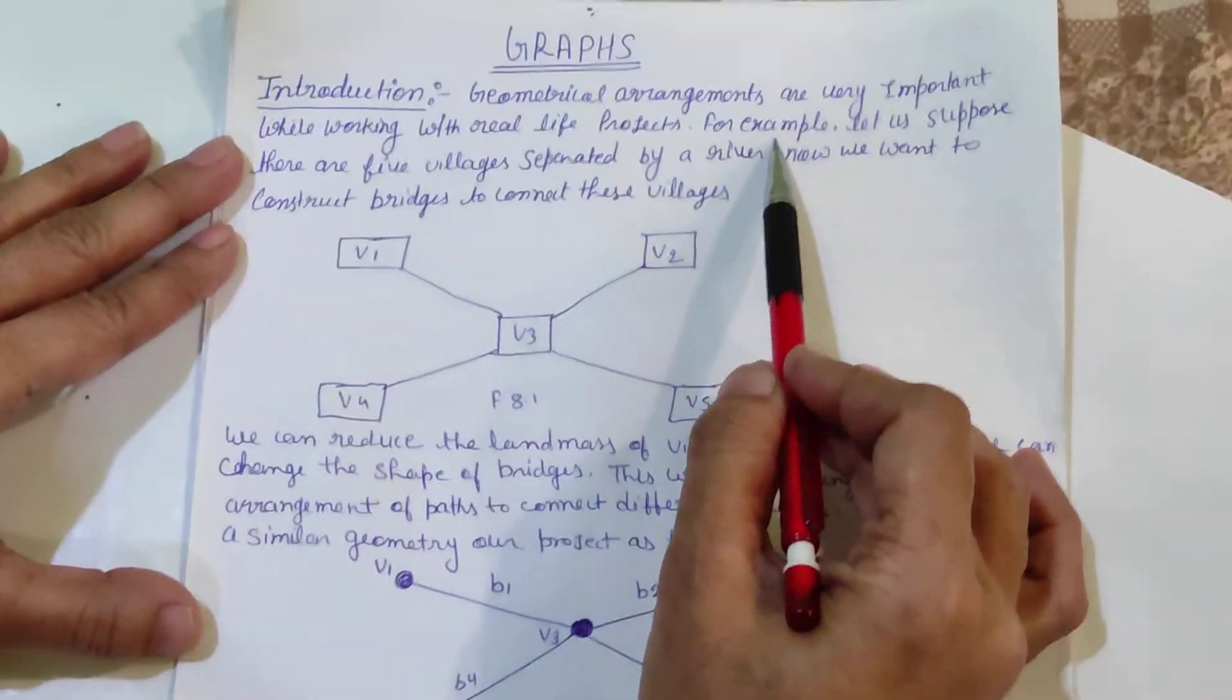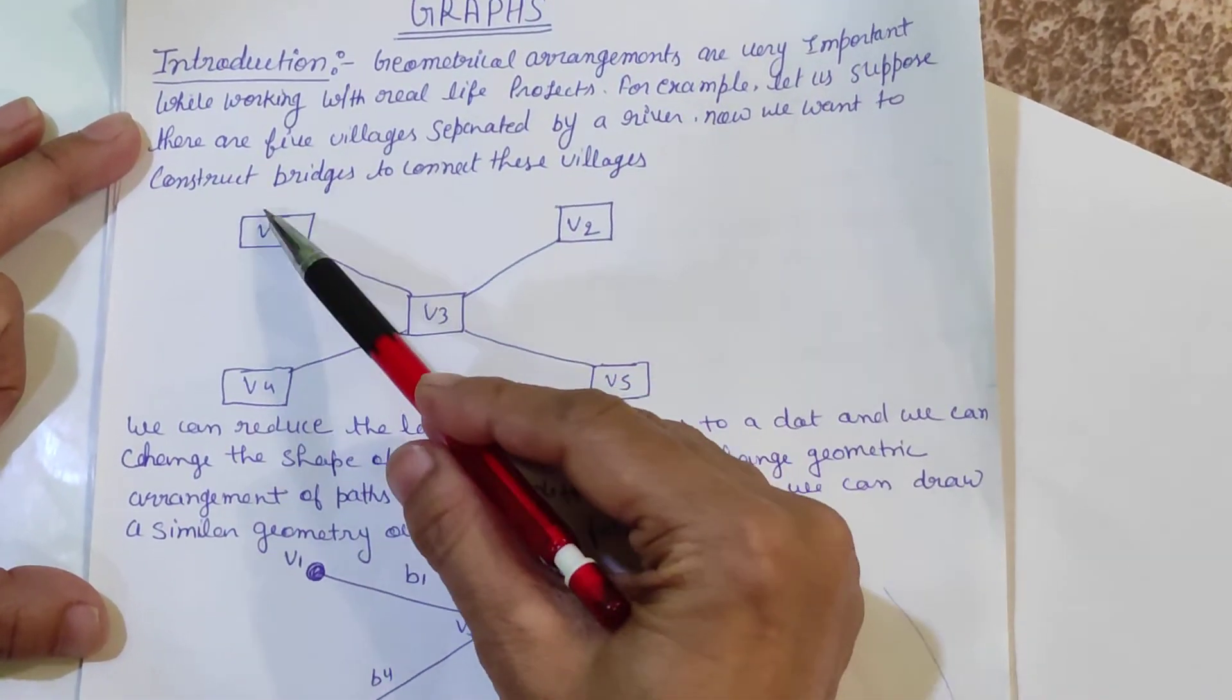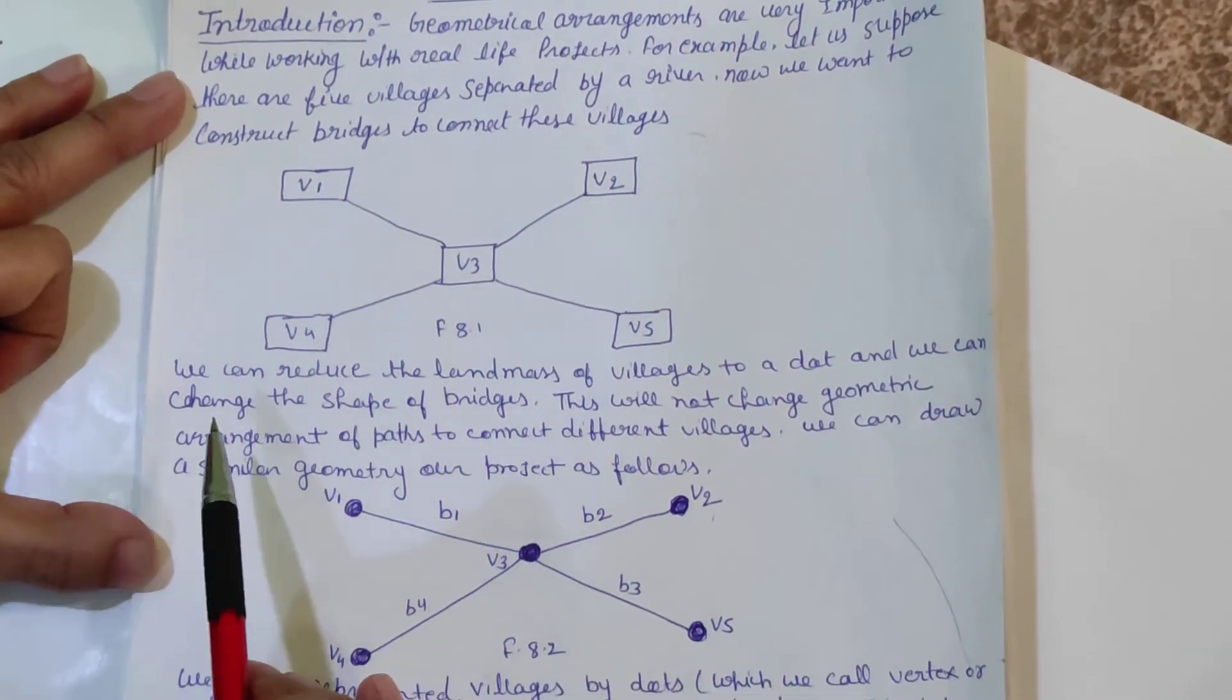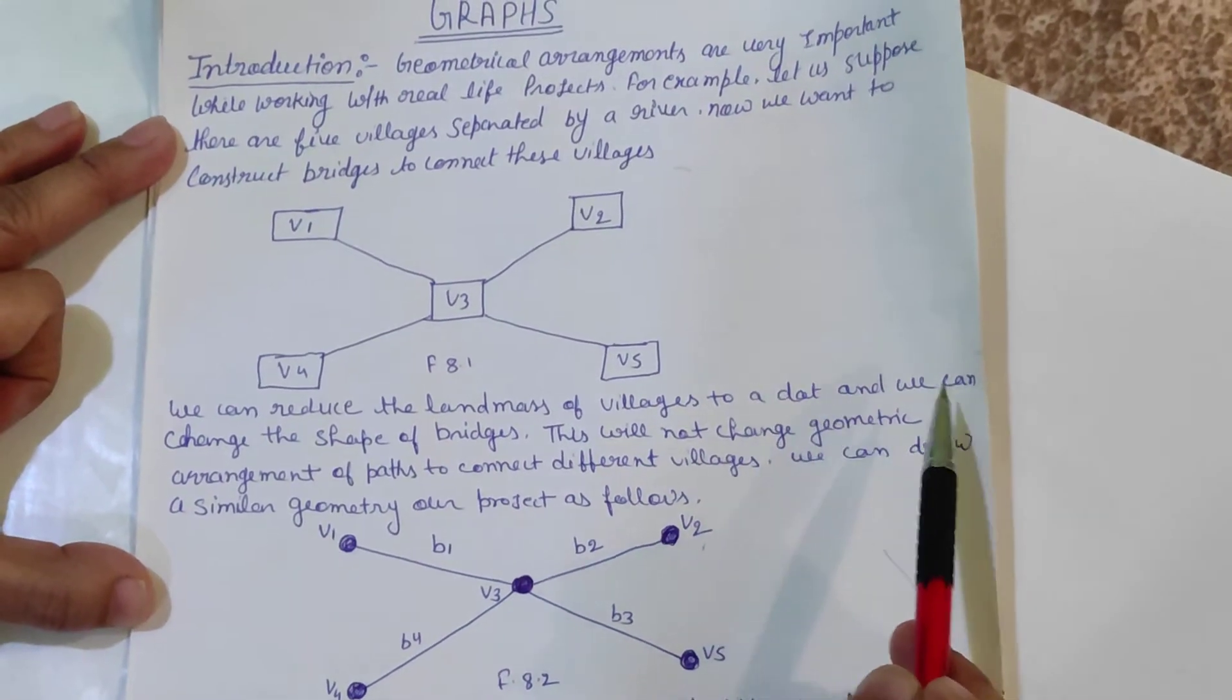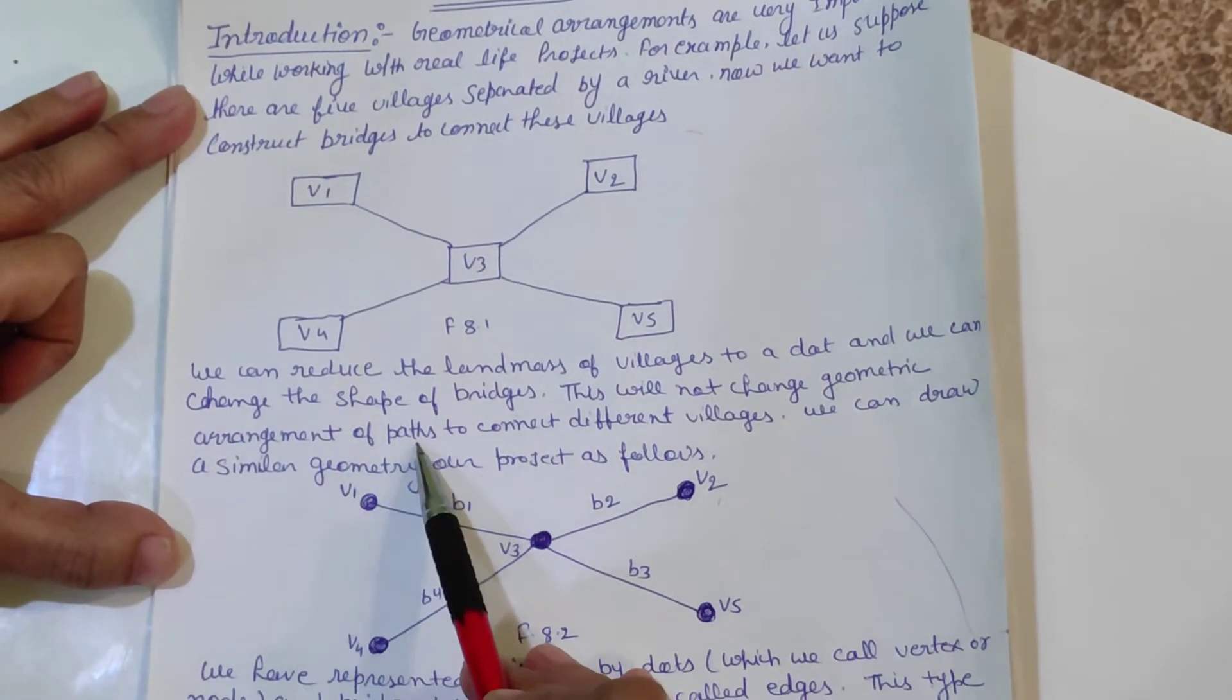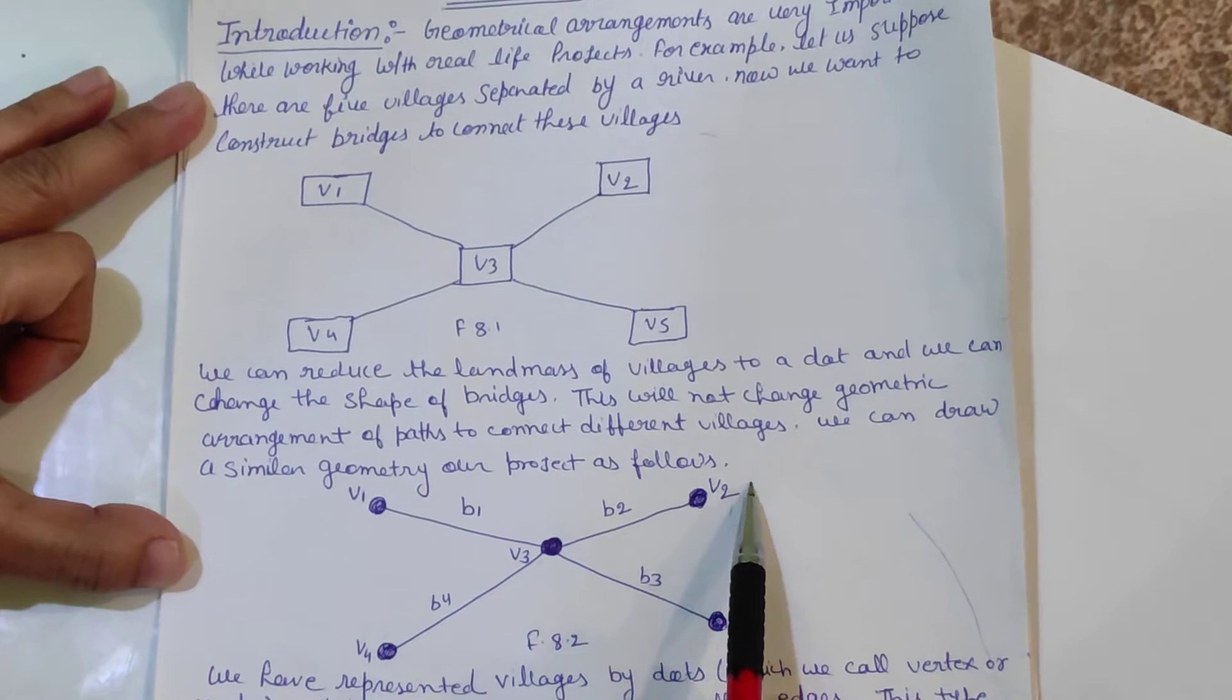For example, let us suppose there are 5 villages separated by a river. Now we want to construct bridges to connect these villages. We can reduce the landmarks of villages to a dot and we can change the shape of bridge. This will not change geometric arrangement of paths to connect different villages.